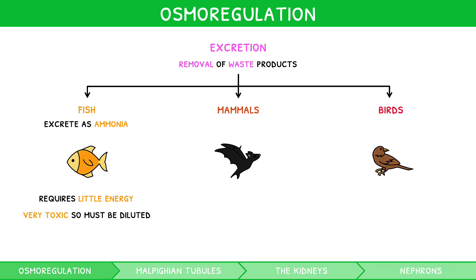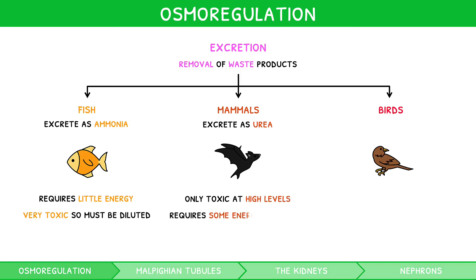Mammals excrete their waste as urea, which is advantageous as it is only toxic at abnormal levels. However, it requires some energy to produce and still requires water for dilution.